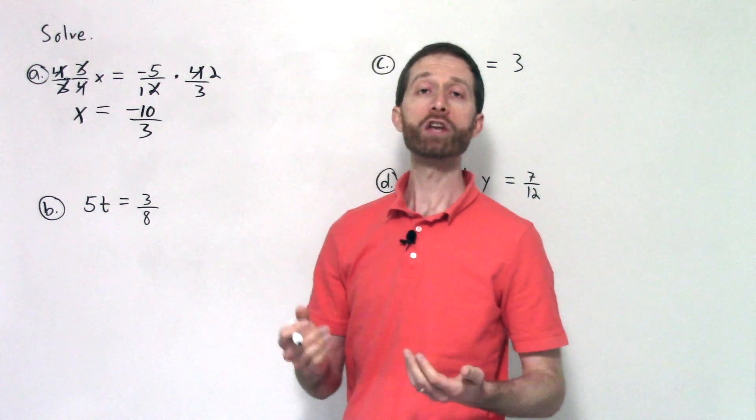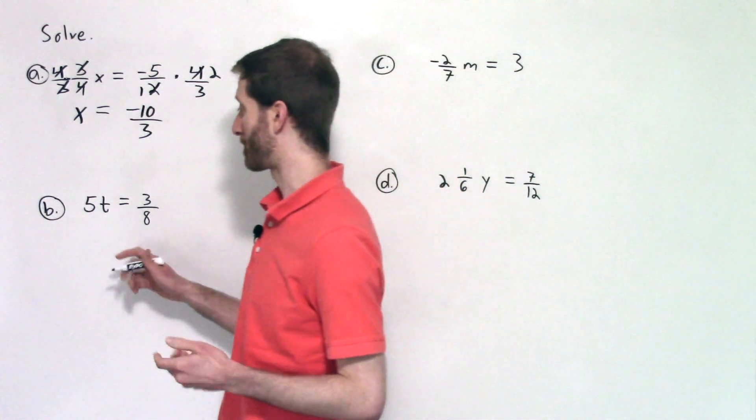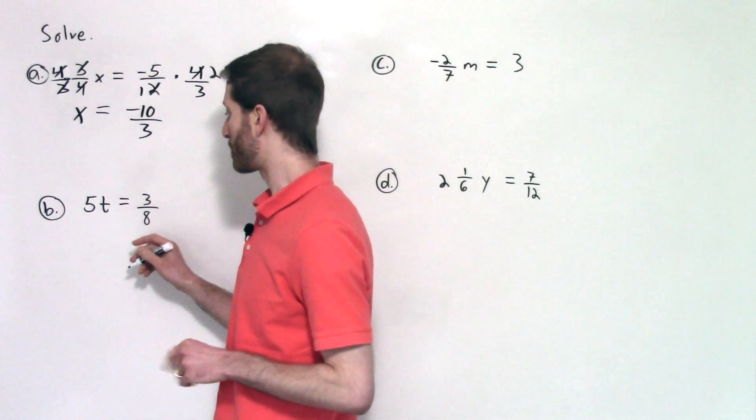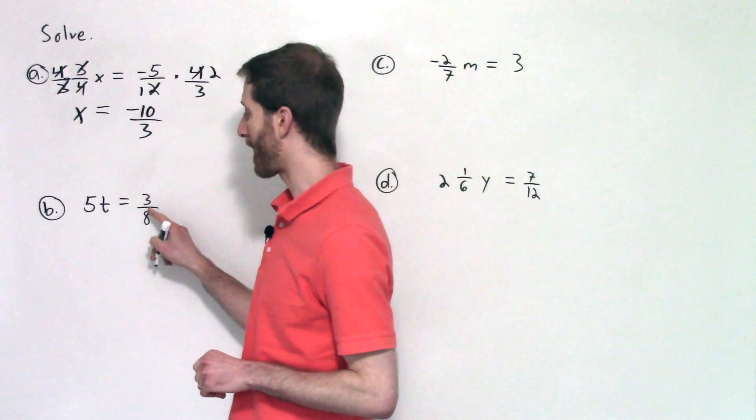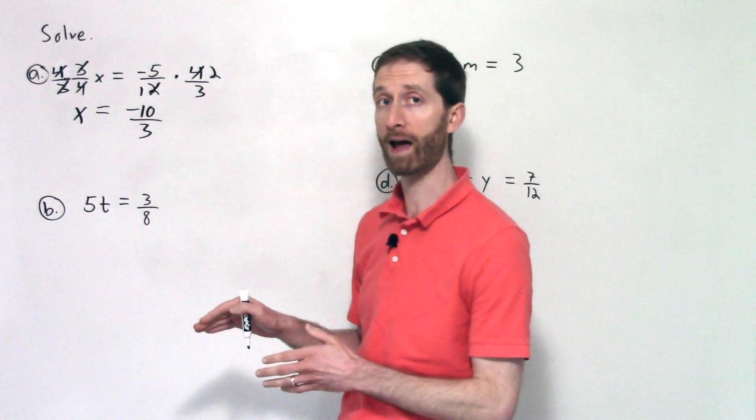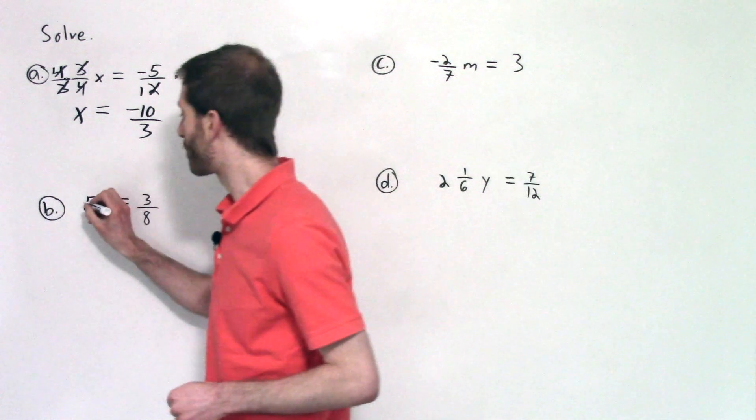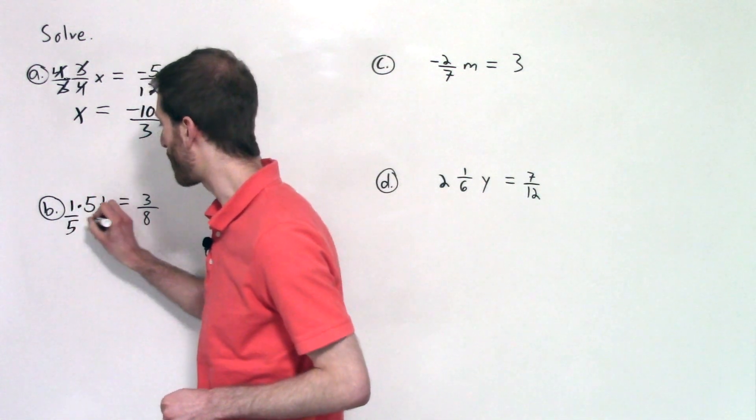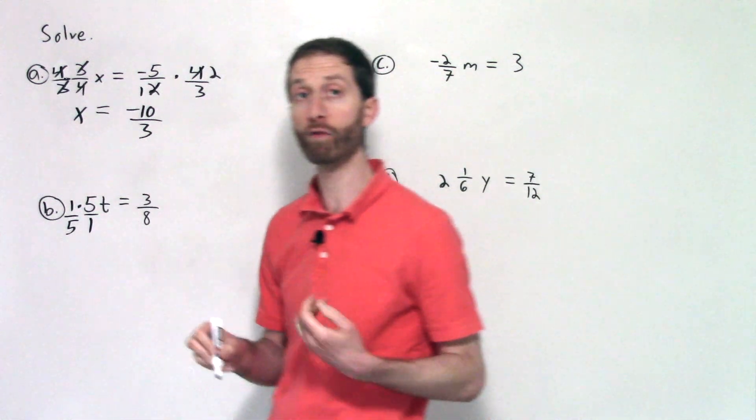Well, we want to undo multiplication by five, so I would divide both sides by five. Now, what I notice is if I'm going to divide both sides by five, I've got a fraction on the right-hand side. So instead of dividing by five, I'm going to multiply by one-fifth, which is the reciprocal of five over one.